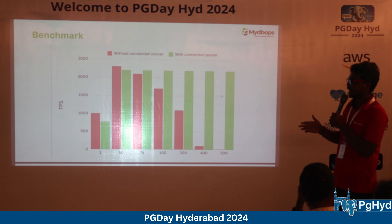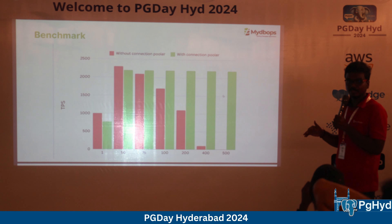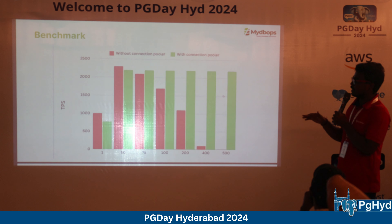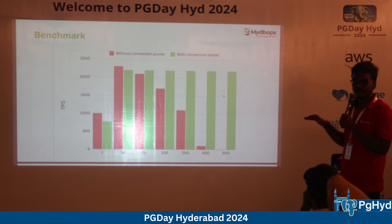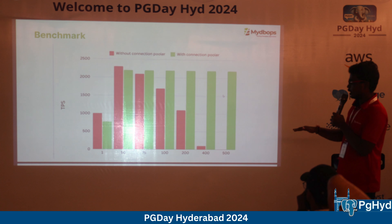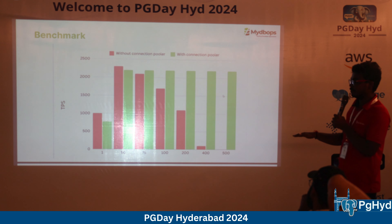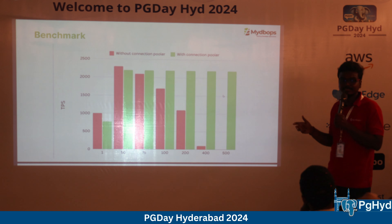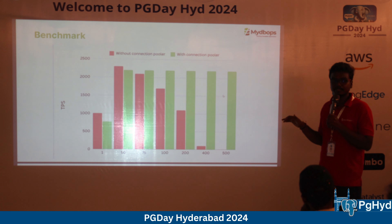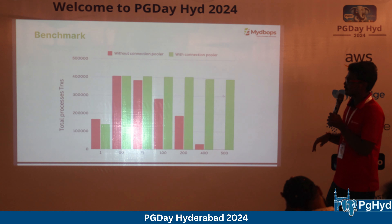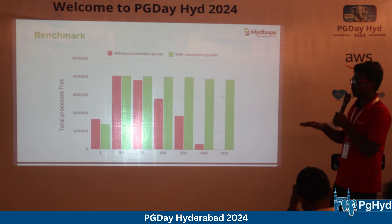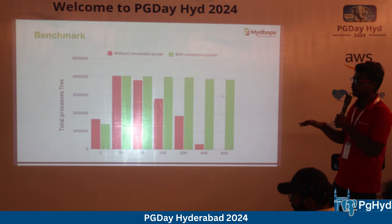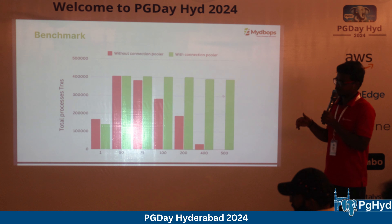The Grafana dashboard prepared by the MyDBops CS team provides complete PG Bouncer statistics and can display data for a week or month depending on your retention settings. The most important metrics to watch are client_waiting and server connection wait counts. If either exceeds one, you need to troubleshoot and either upscale the instance or increase the pool size.